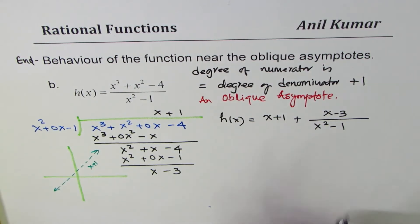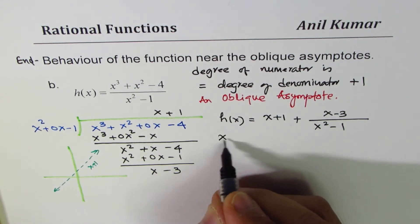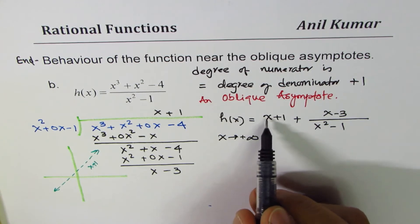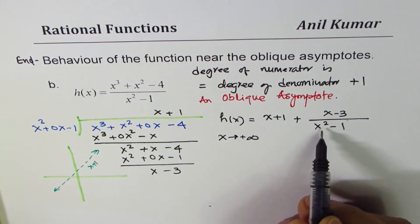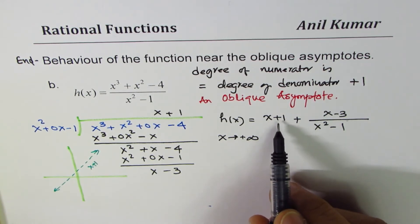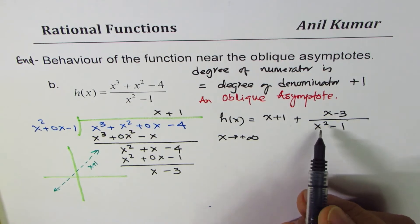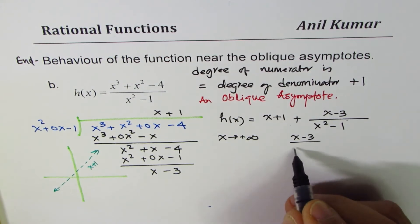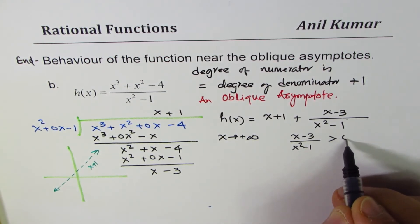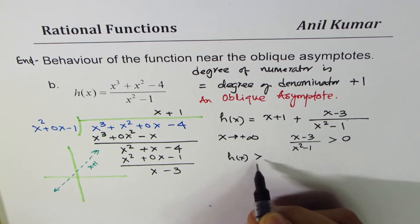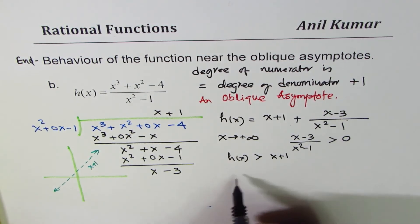To check the end behavior, if x is approaching positive infinity, that means a large value. In that case, x plus 1 plus x minus 3 over x squared. Since x squared is in the denominator, this value is very small. That's why we have an asymptote. It approaches x plus 1, but it is not quite there. We also observe, if x is positively large, x minus 3 over x squared minus 1 is greater than 0. It is also positive.